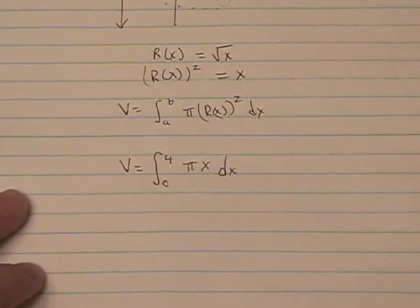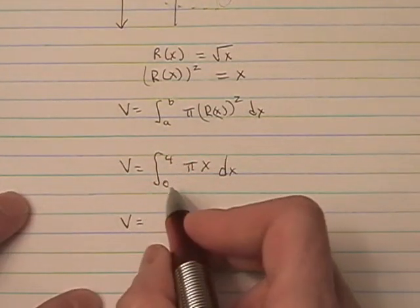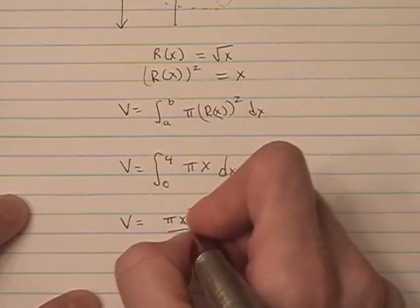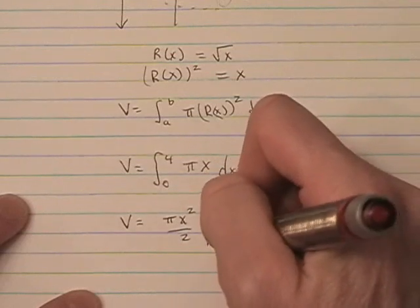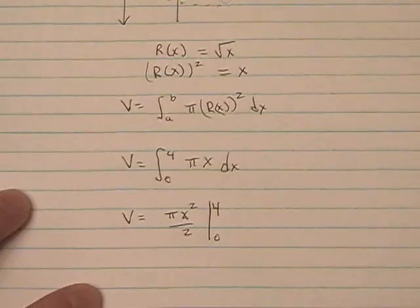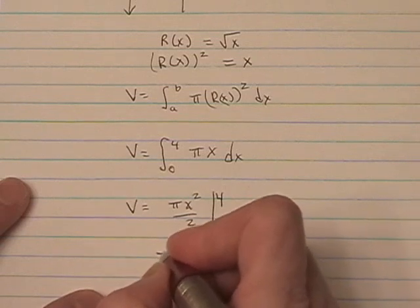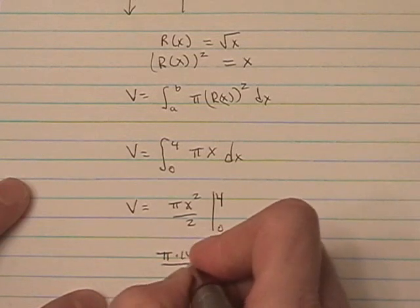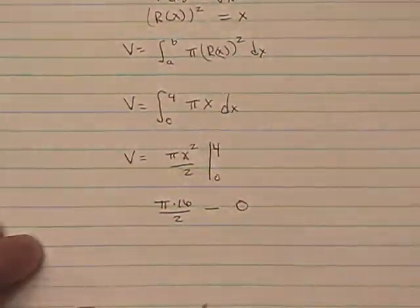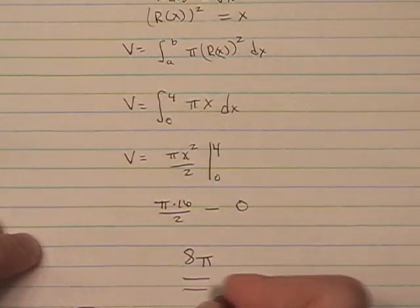Using the rules of integration, I end up with pi x squared over 2, evaluated using the fundamental theorem of calculus part 2 between 0 and 4. Big F of b minus big F of a gives us pi times 16 over 2 minus 0. And this turns out to be 8 pi. So, the volume is 8 pi.